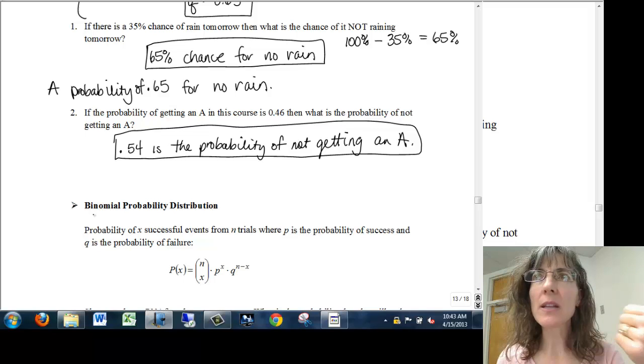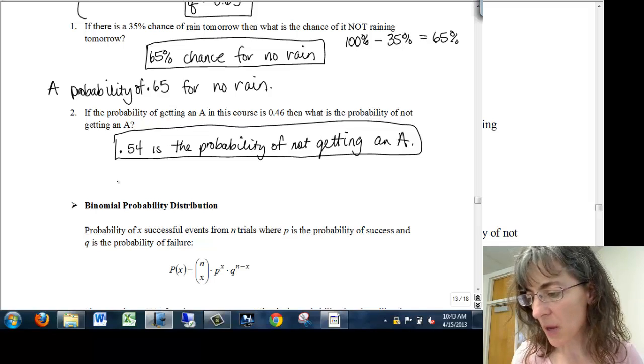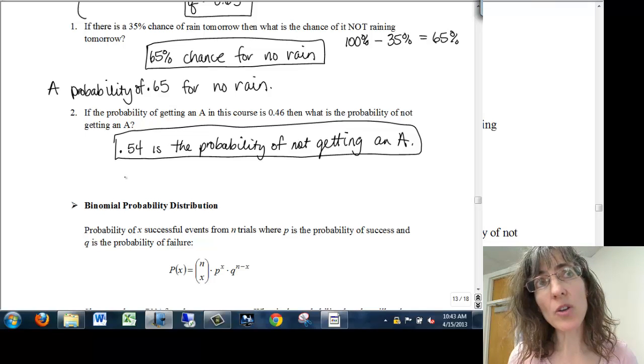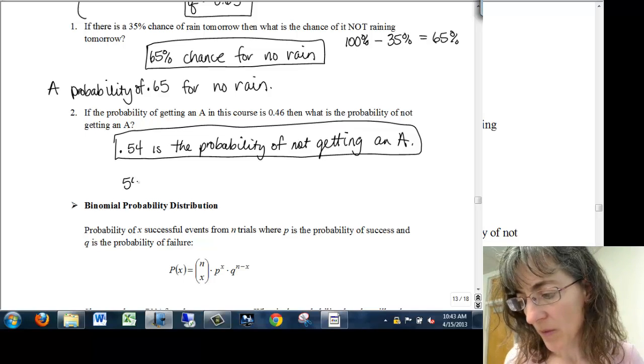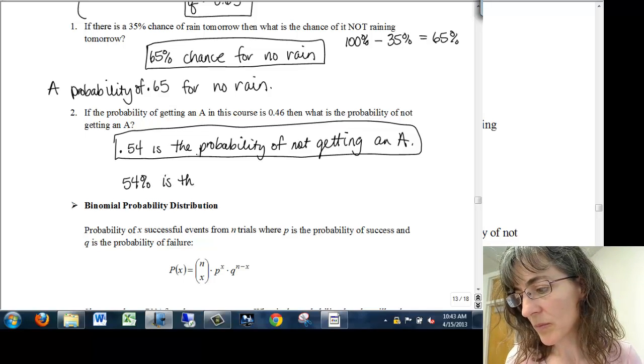Okay, so what do I want to say for this one? If I ask you for the likelihood of not getting an A, what could you say? Point five four is the likelihood of not getting an A.